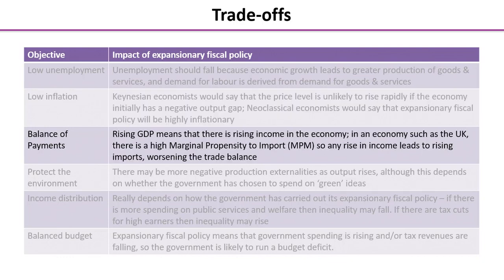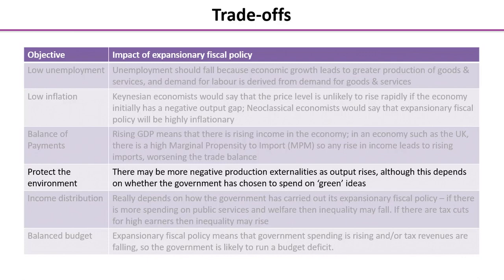Looking at the balance of payments, rising GDP should mean that there is rising income in the economy. In an economy such as the UK there is a very high marginal propensity to import — out of every extra pound earned, quite a high proportion is spent buying imports. This means that any rise in income leads to rising imports and that could worsen the trade balance.